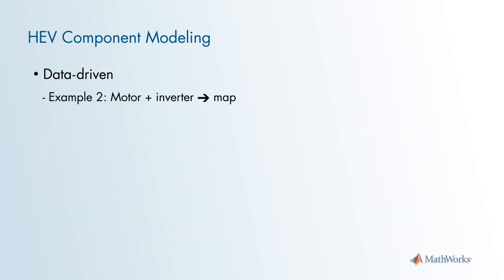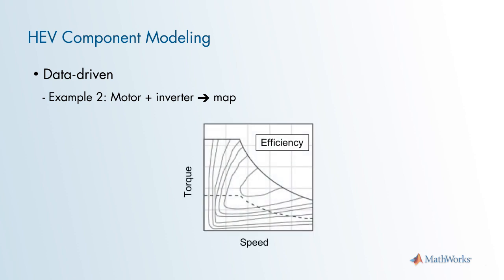Another example of a data-driven model is using an efficiency map to represent the combination of an electric machine and inverter. The efficiency map is indexed by speed and torque and bounded by a maximum torque versus speed curve. These models are well suited for system-level energy consumption simulations because we are primarily concerned with tracking losses, so it is not necessary to model the high-speed power electronics switching dynamics of a real inverter.